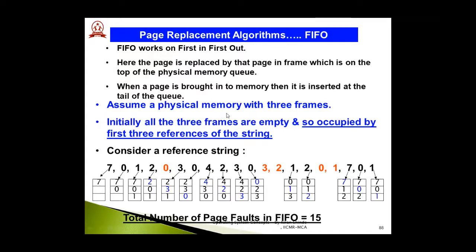Let's understand FIFO with an example. Physical memory is assumed to have three frames, so initially all three frames are empty and are occupied by the first three references of the string. The given reference string contains all the page references. Since physical memory has three frames, page 7 occupies the first frame, then 0 the second, then 1 the third. Now pages 7, 0, and 1 are mapped to the three frames.